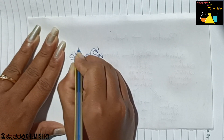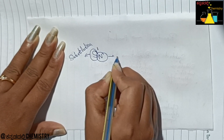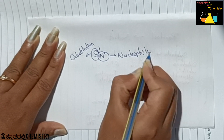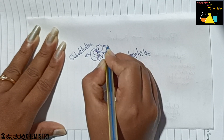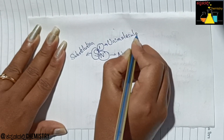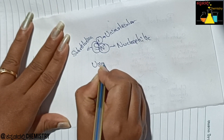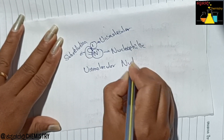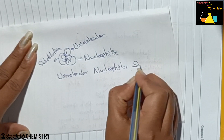S stands for substitution, N stands for nucleophilic. So SN means nucleophilic substitution. The 1 in SN1 stands for unimolecular — unimolecular nucleophilic substitution reaction.